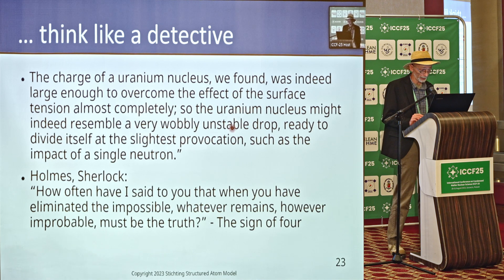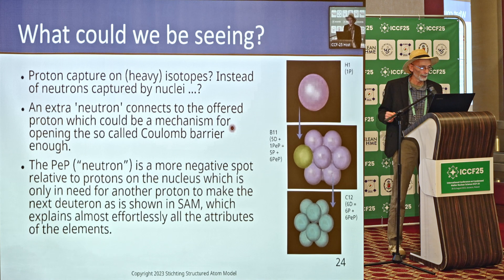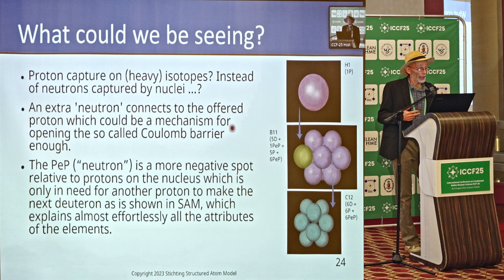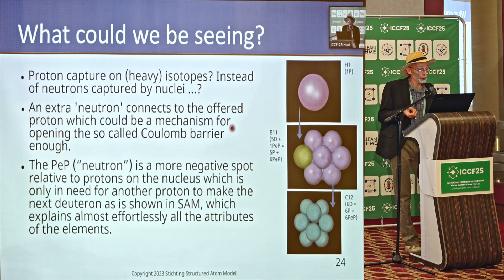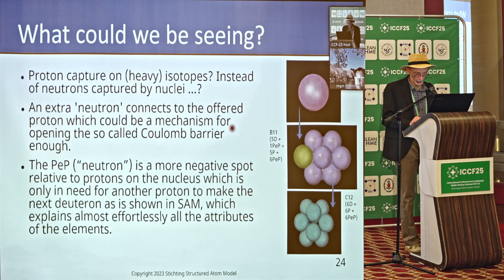So the uranium nucleus might indeed resemble a very wobbly, unstable drop, ready to divide itself at the slightest provocation — such as the impact of a single neutron. And in this case I'm explaining how a proton might even do that. Following Sherlock Holmes' thinking: 'How often have I said to you — when you have eliminated the possible, whatever remains, however improbable, must be the truth.' What we could be seeing is proton capture on heavy isotopes — many times the heavier isotopes of a specific element. Instead of neutrons captured by the nuclei, an extra neutron connects to the offered proton, which could be the mechanism for opening the so-called Coulomb barrier. We see a proton offered to boron-11, which turns into carbon-12.